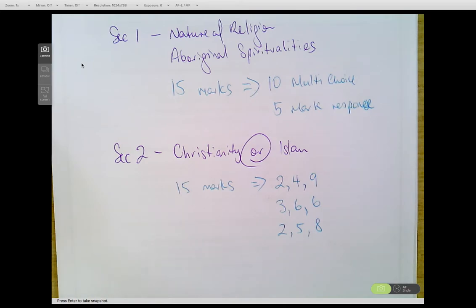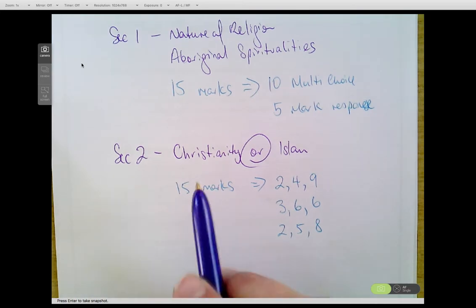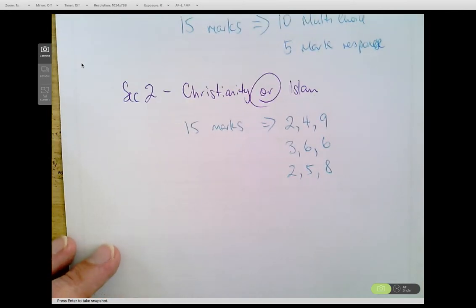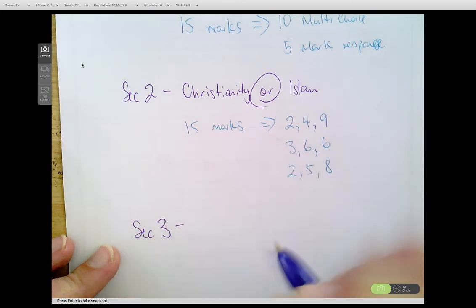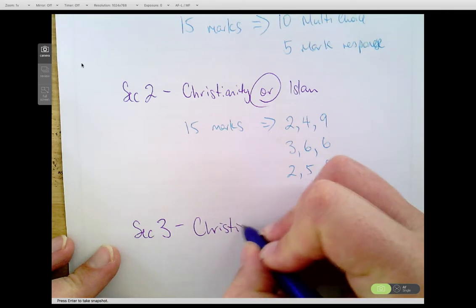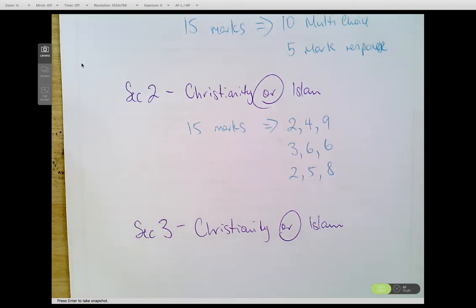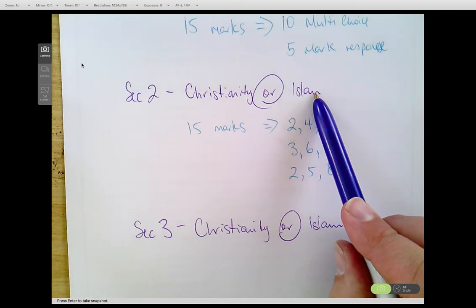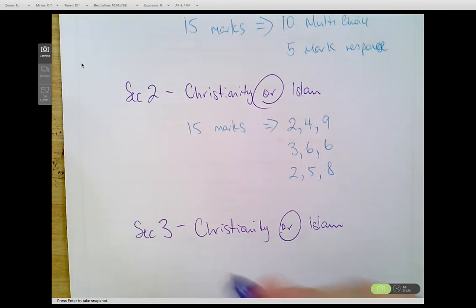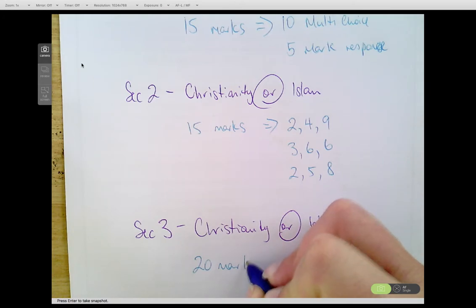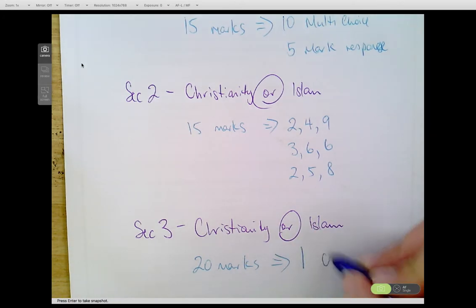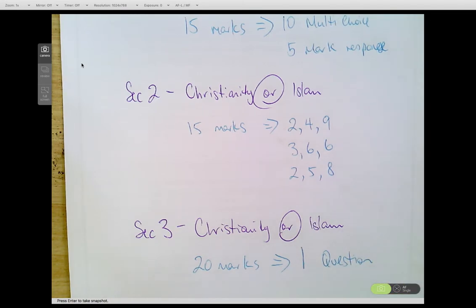Alright, so this one I said you have a choice, it's worth 15 marks. Section 3 is worth 20 marks. So you have to be prudent as to what you choose to answer. Again, Section 3 has the exact same options as Section 2, however it's worth 20 marks and it's one question, so it's an extended response worth 20 marks.